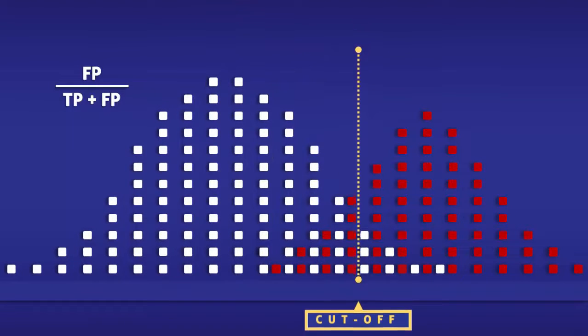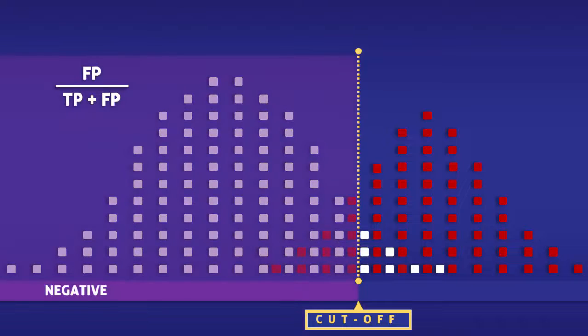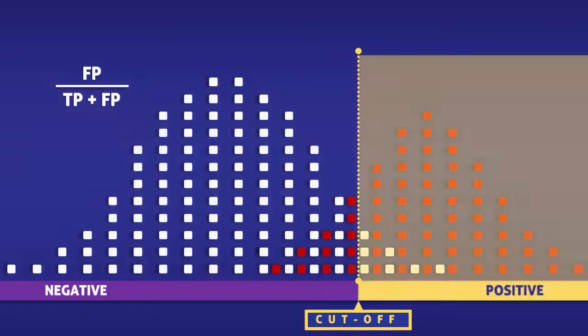This yellow line represents a cutoff level for a test. To the left of the line, the test returns negative, and to the right, it returns positive.